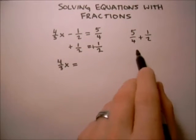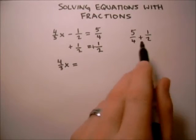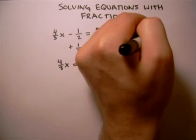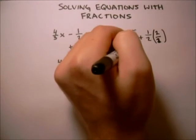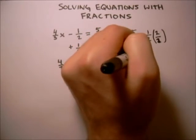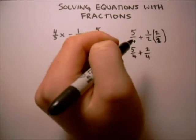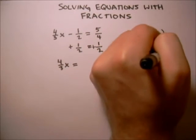Now when we add fractions we need to find a common denominator, which in this case would be 4. And so we need to multiply this fraction by 2 over 2. And that gives us 5 fourths plus 2 fourths. And that gives us 7 fourths.